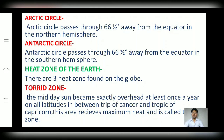Friends, due to these circles and with the help of sunlight, there are also some heat zones found on the earth. As we know, the earth is in a spherical shape, and due to this, the sunlight is not uniform on the earth. Due to this reason, some heat zones are found on the earth. There are basically three types of heat zones on the earth.